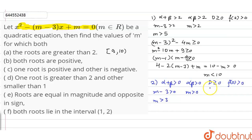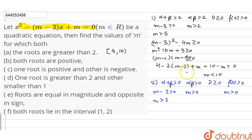For alpha beta greater than 0, m should be greater than 0. For D greater than or equal to 0, using the same condition with equality, this holds for m less than or equal to 1 or m greater than or equal to 9. For f(0) greater than 0, putting x equal to 0 gives m should be greater than 0. Taking the intersection of all these conditions, we are left with m belonging to [9, infinity).